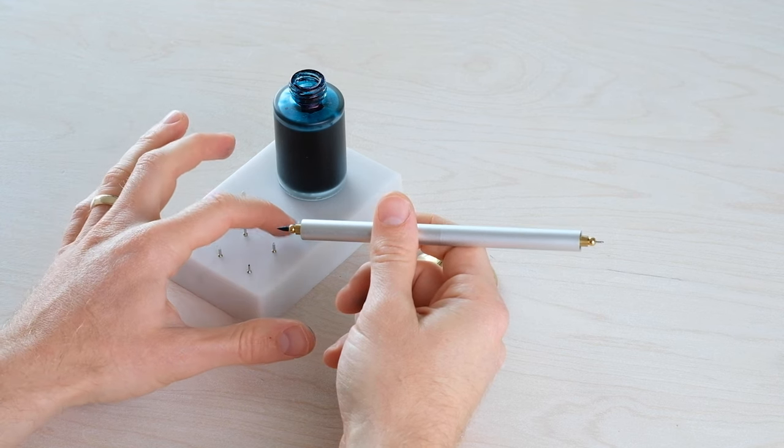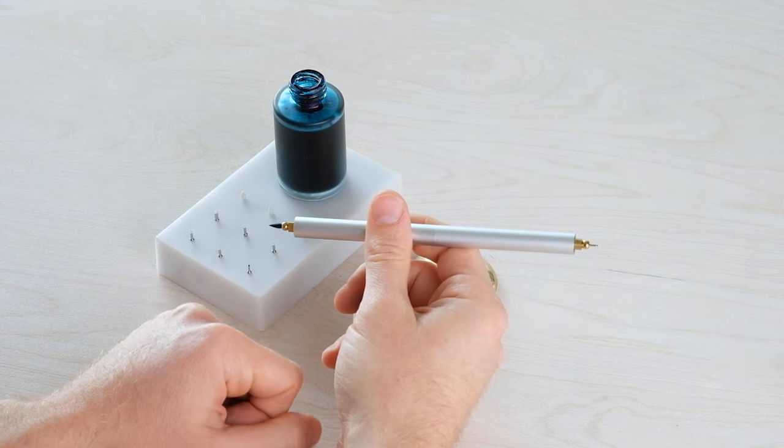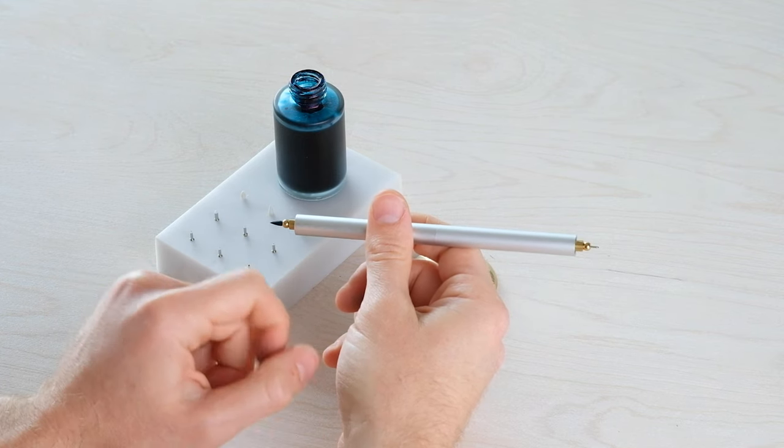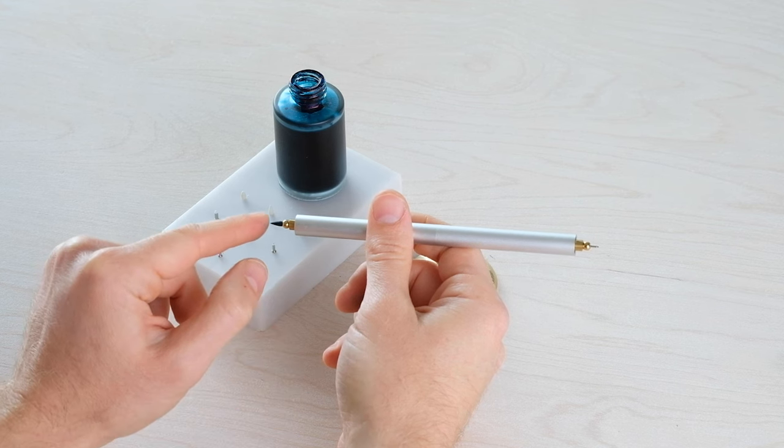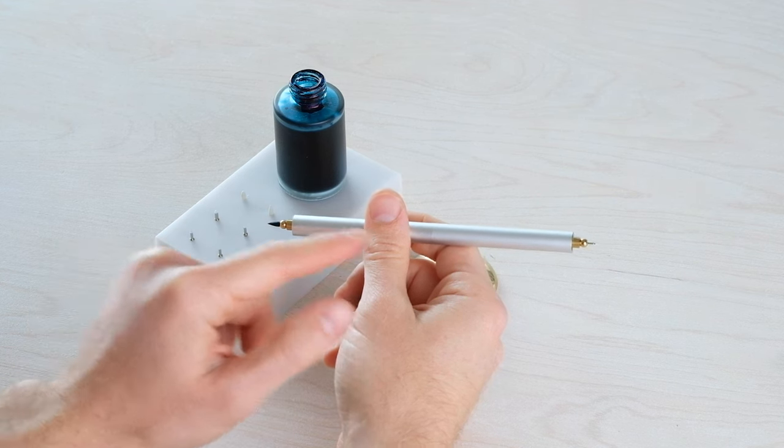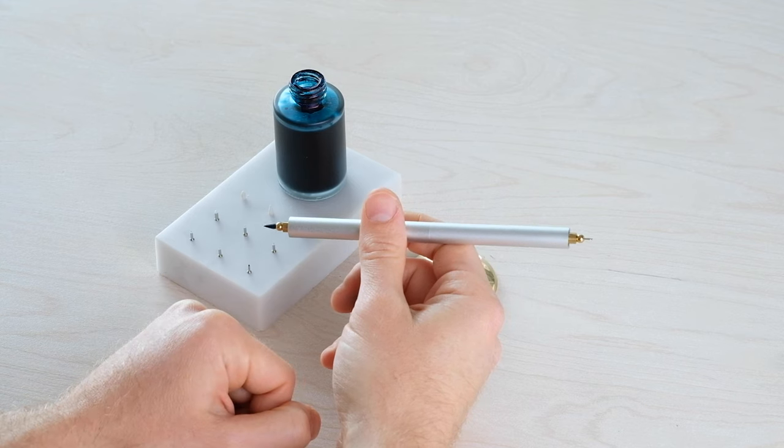felt tip, and brush pen. Each of those can go into either side, and each has its own reservoir, which means you can have one ink color or type in one side and a different ink color and type in the other.